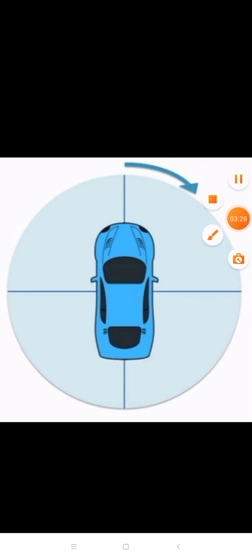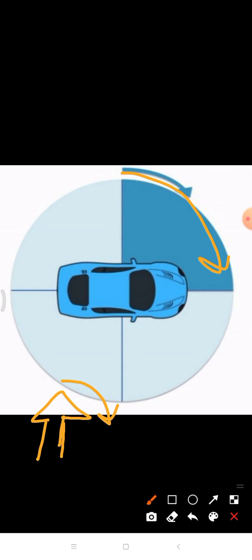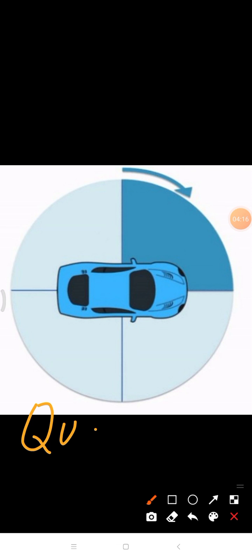Let's understand a quarter turn. When the car moves in a clockwise direction, it reaches the first line — it has turned through one of the four parts of the circle. For example, an arrow given a quarter turn in a clockwise direction will point accordingly. One quarter is equal to one-fourth of the full circle.